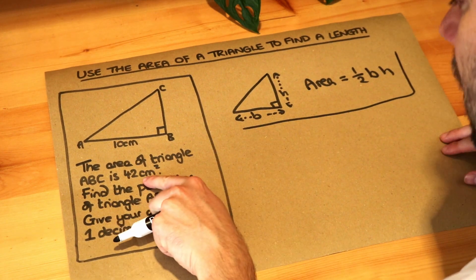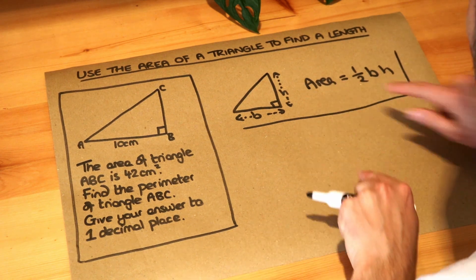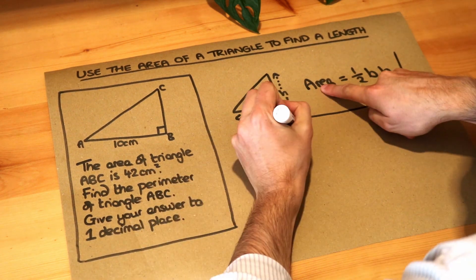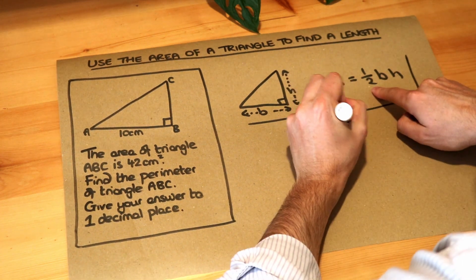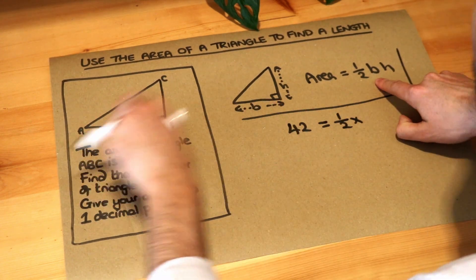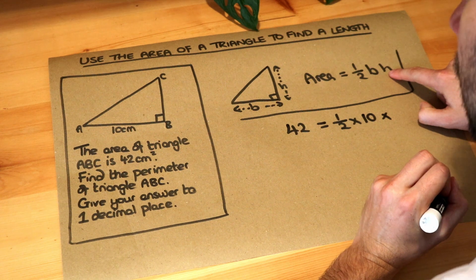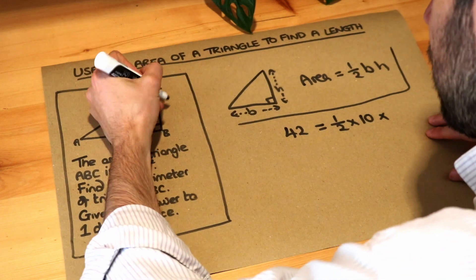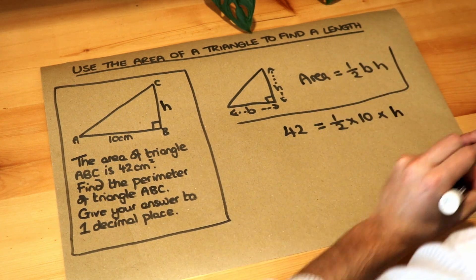So let's just use all the information we've got and plug it into this formula here. We've got the area, which we're told is 42, that is equal to half multiplied by the base, which we're told is 10, multiplied by the height, which we don't know. We're just going to call that H for height.